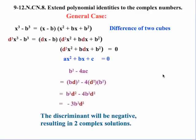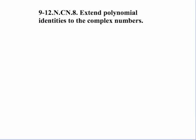You might consider taking this a step further, but it's really beyond the scope of this standard. You can look at the general graph of the sum or difference of two cubes and see that you'll always have just one x-intercept when you set it equal to zero — so you will always get just one real solution, making the other two complex. This standard — extend polynomial identities to the complex numbers — is not as simple as it looked, because there are quite a few scenarios with the polynomial identities to consider.